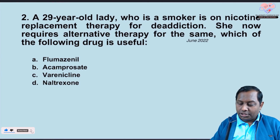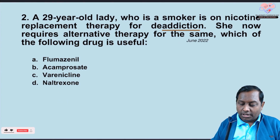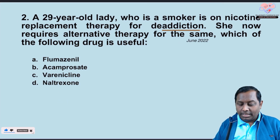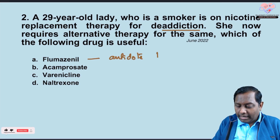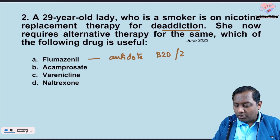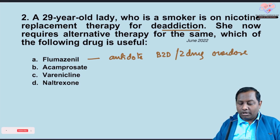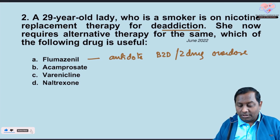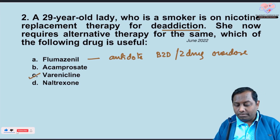The second question is about a 29-year-old lady who is a smoker on nicotine replacement therapy for de-addiction. She now requires alternative therapy. Flumazenil is an antidote for benzodiazepine overdose — not relevant here. Among the given choices, the drug that is a partial agonist at nicotinic receptors is varenicline, which is the most preferred drug for smoking de-addiction.